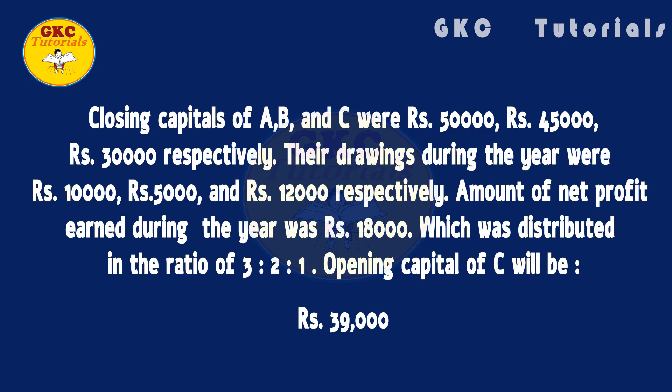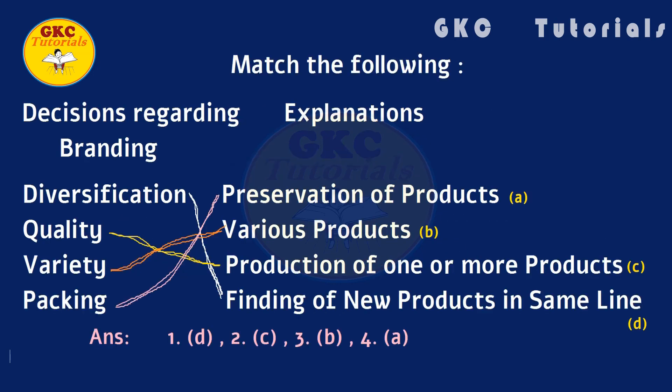Closing capitals of A, B, and C were rupees 50,000, rupees 45,000, and rupees 30,000 respectively. Drawings were rupees 10,000, rupees 5,000, and rupees 12,000 respectively. Net profit earned during the year was rupees 18,000, distributed in the ratio of 3:2:1. Opening capital of C will be rupees 39,000.